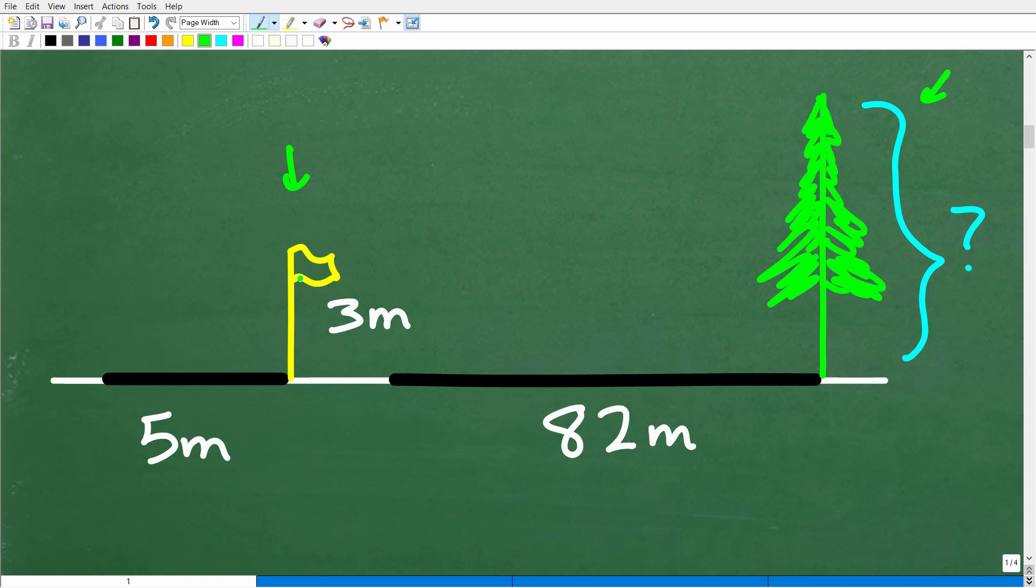Here is our flagpole. And here is our tree. So we have a flagpole. It's three meters tall. It's casting a shadow of five meters. And we have this tree. We don't know how tall the tree is. Of course, that is the question. But it's casting a shadow of 82 meters.